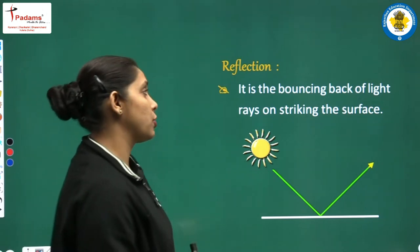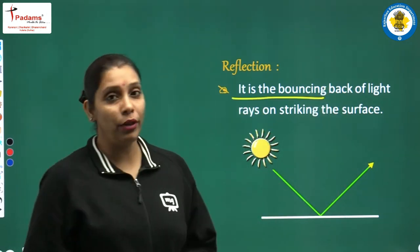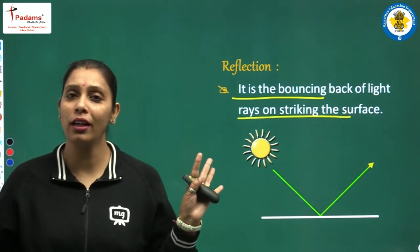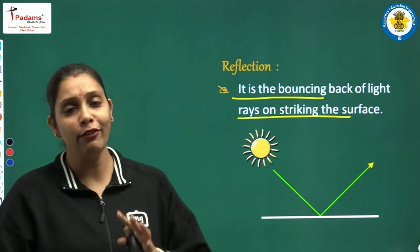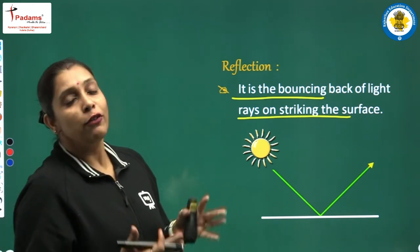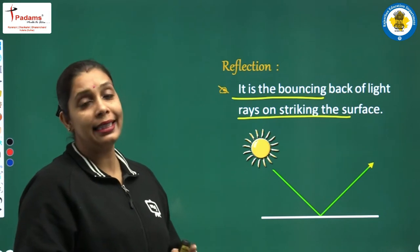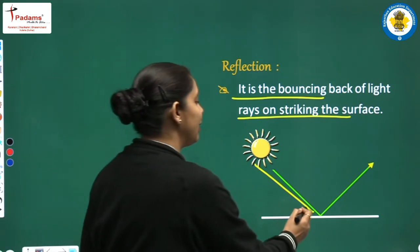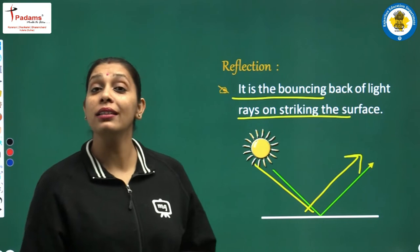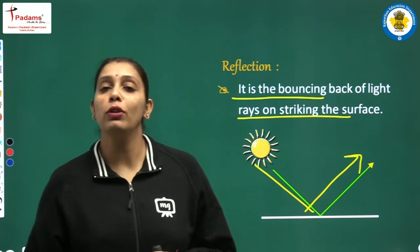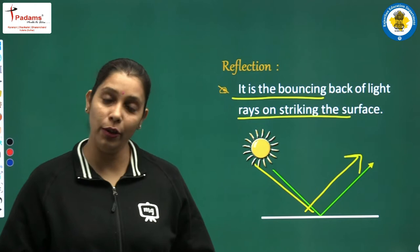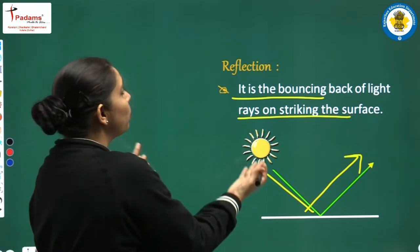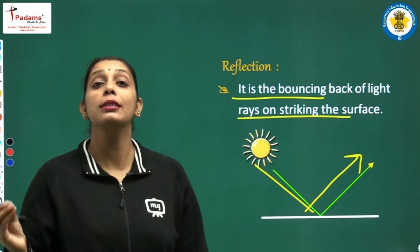Let's talk about reflection. It is the bouncing back of light rays on striking the surface — the simplest phenomenon that we already had started in class 7. From the source of light, we are getting light rays. When they strike on any surface, they bounce back. By this process, by this phenomenon, it is possible for us that things are visible to us.